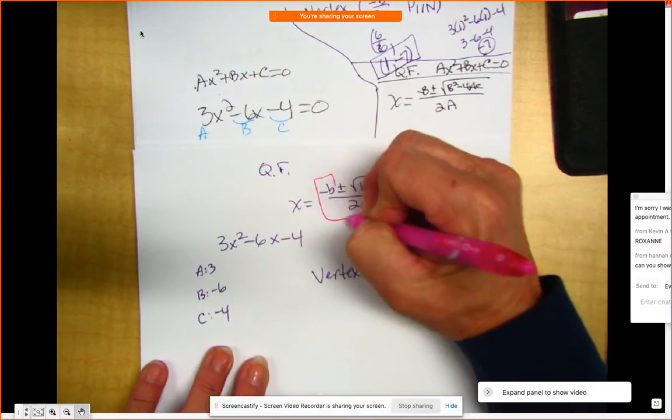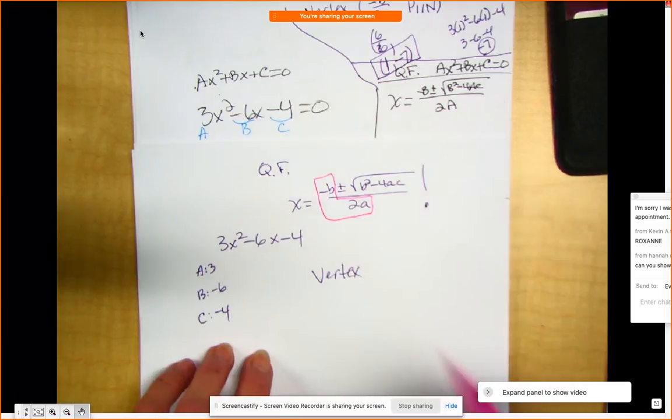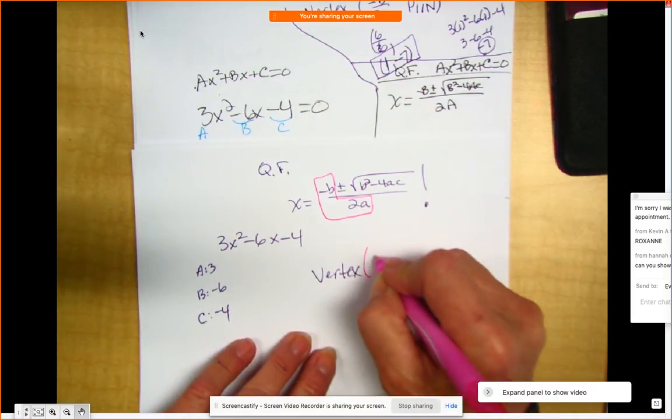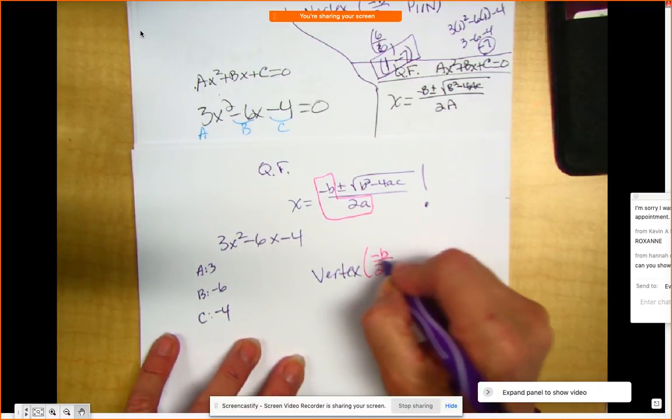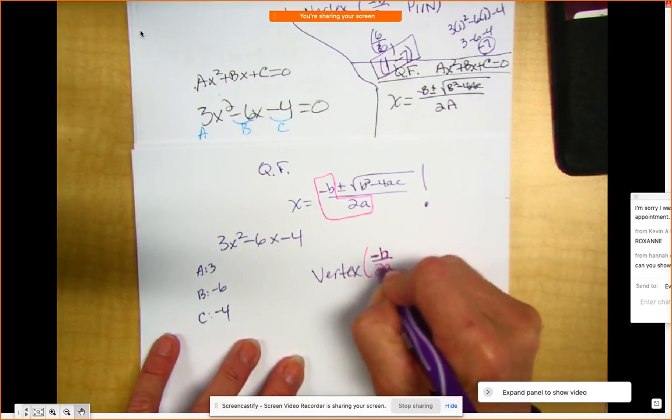This is always the x part of your vertex. The opposite of b divided by 2 times a. I'll write that a little darker. Opposite of b divided by 2a.